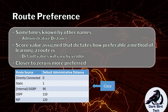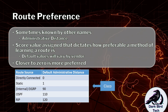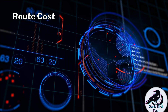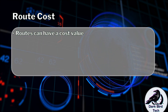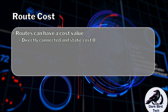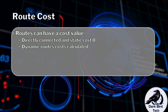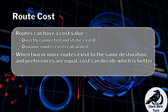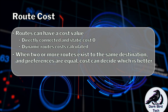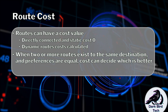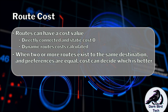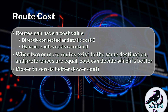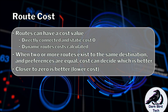Assuming you have two routes to the same destination network and they are both learned through the same method, it comes down to cost to decide which one to use. Every route has a cost value. Directly connected and static routes get a cost value of zero. Dynamic routes have their costs calculated by the dynamic routing protocol. When two or more routes exist to the same destination and preferences are equal, cost decides which is generally better — and closer to zero is always the better option.